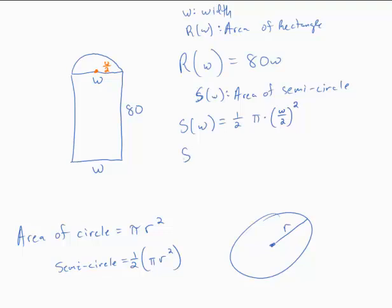So let's simplify that. We would have one half times pi times W squared over 4, and so I would have pi over 8 W squared.